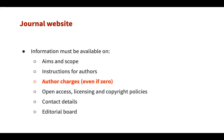We also expect certain policy information on your website: the aims and scope, instructions for authors, and what the author charges are. Even if you're not charging authors anything, you need to state that because transparency is really important, especially in terms of charging. We need to see your open access licensing and copyright policies, contact details showing where the journal is based and how to get in touch, and a list of the editorial board working on the journal.